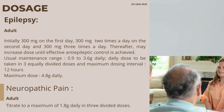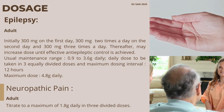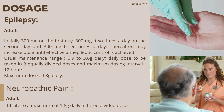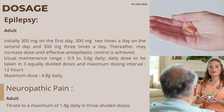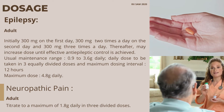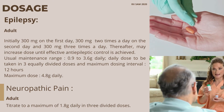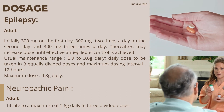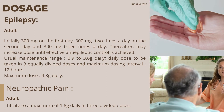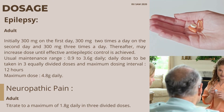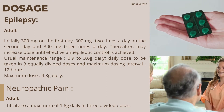Maximum dose for epilepsy: 4.8 g daily. For neuropathic pain, titrate to a maximum of 1.8 g daily in three divided doses.